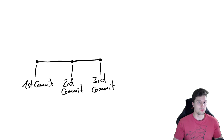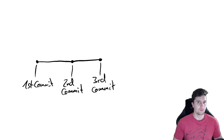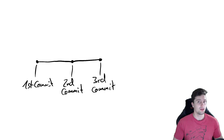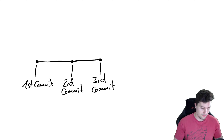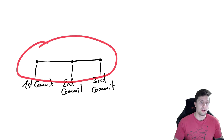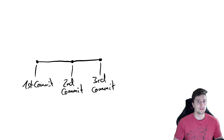They belong together on a single branch, and we already have that branch here, which is the master branch. The default branch name in Git is the master branch. They wanted to change the name at some point but didn't, so depending on when you watch this video there may be a different name for that default branch. Every Git project basically has a default branch, and on that branch are our default commits.